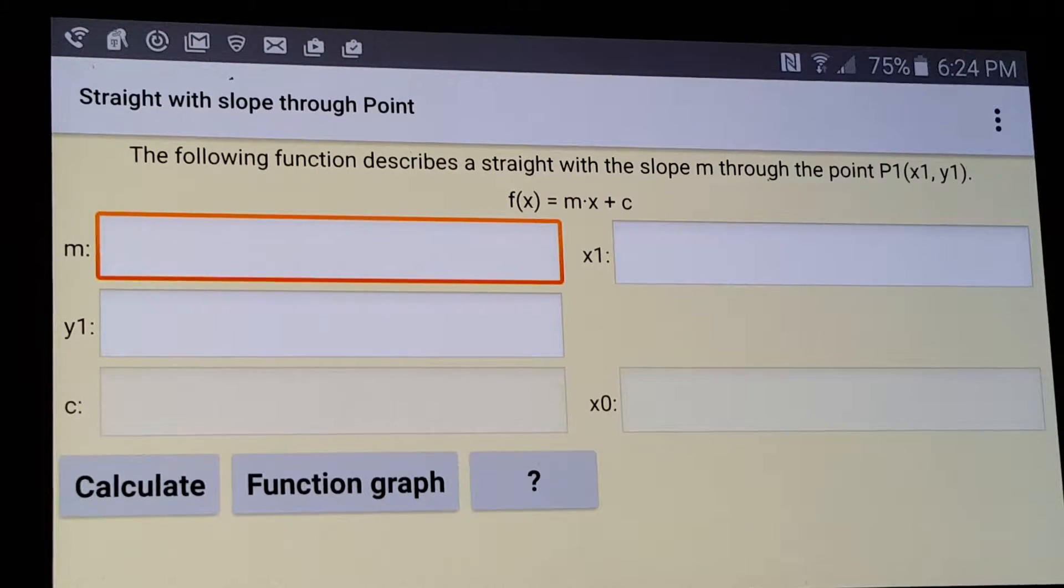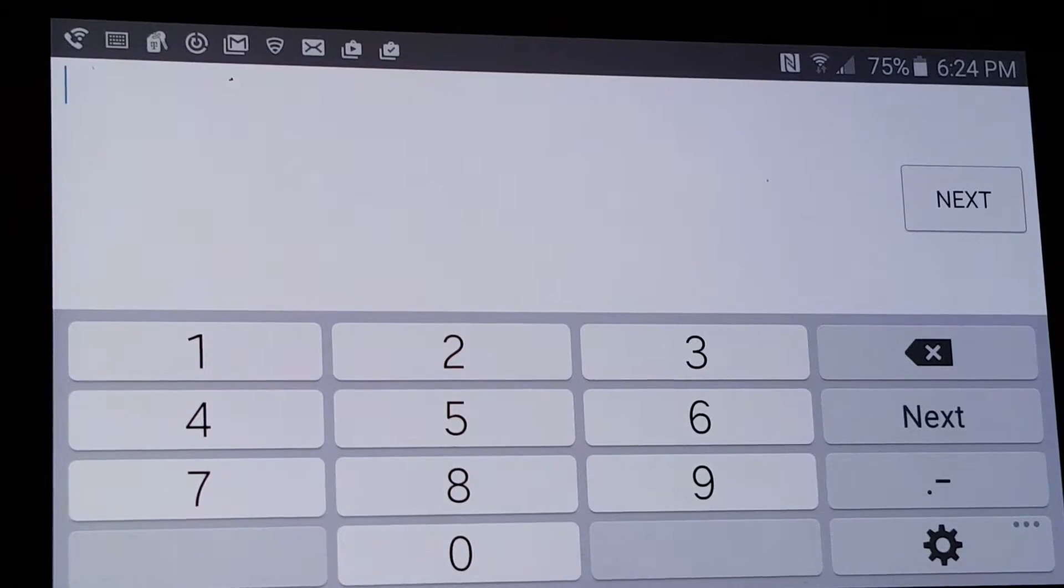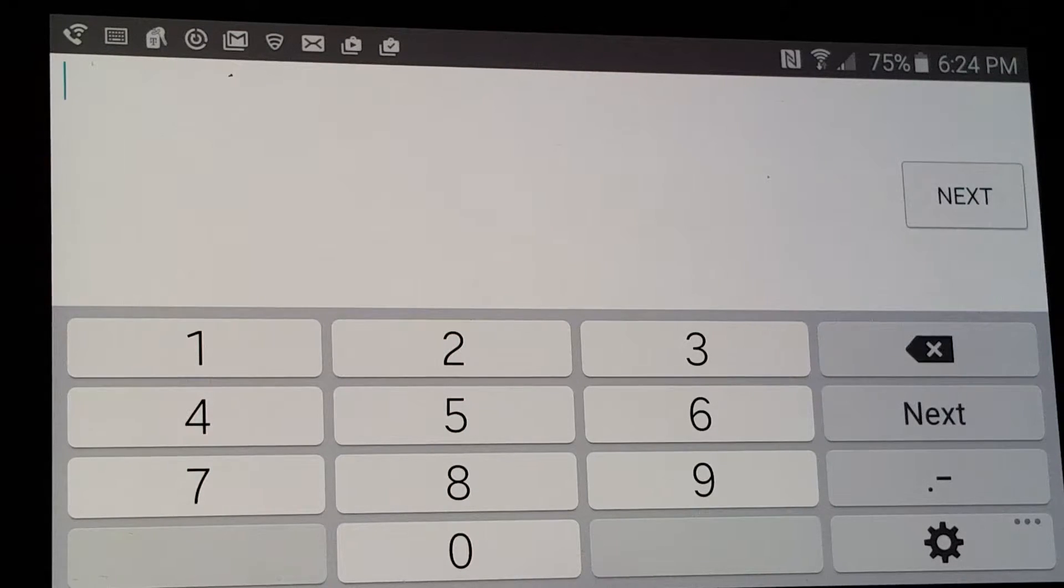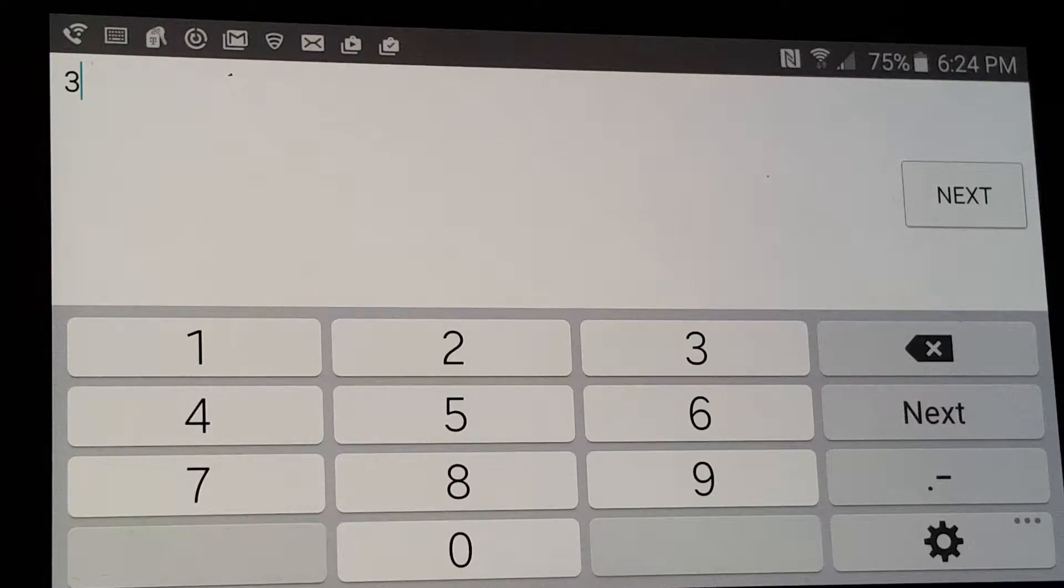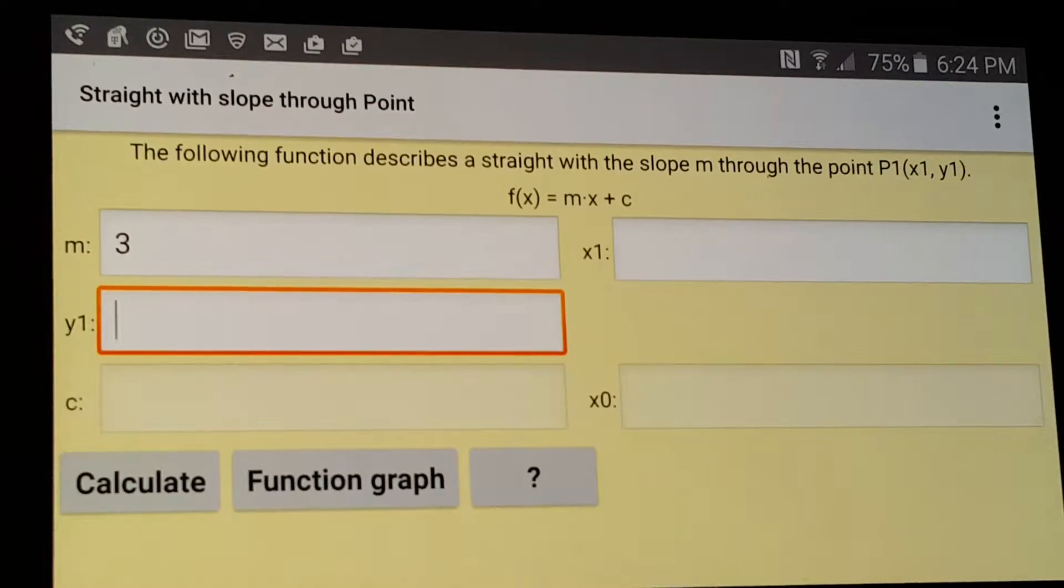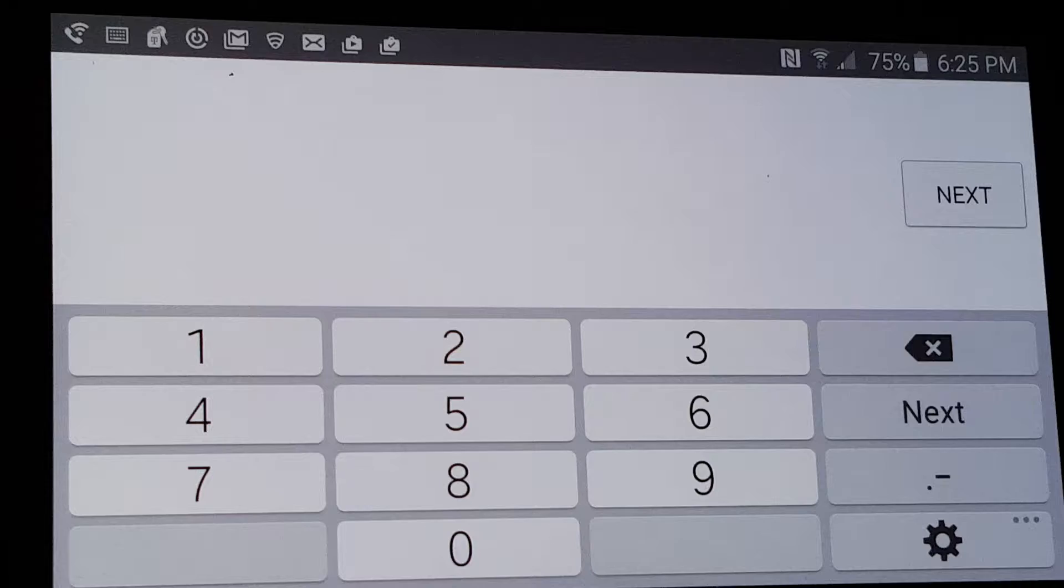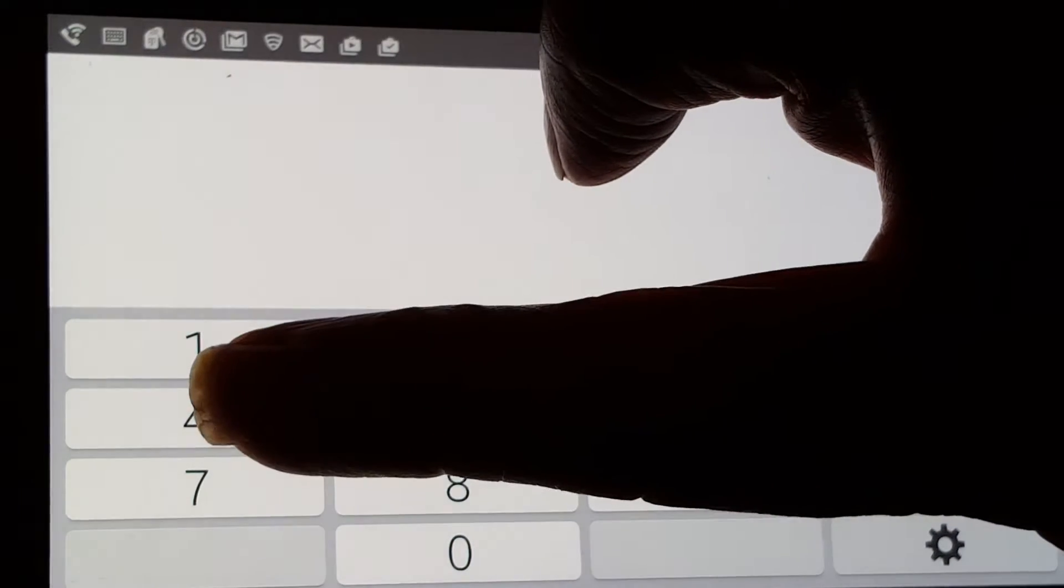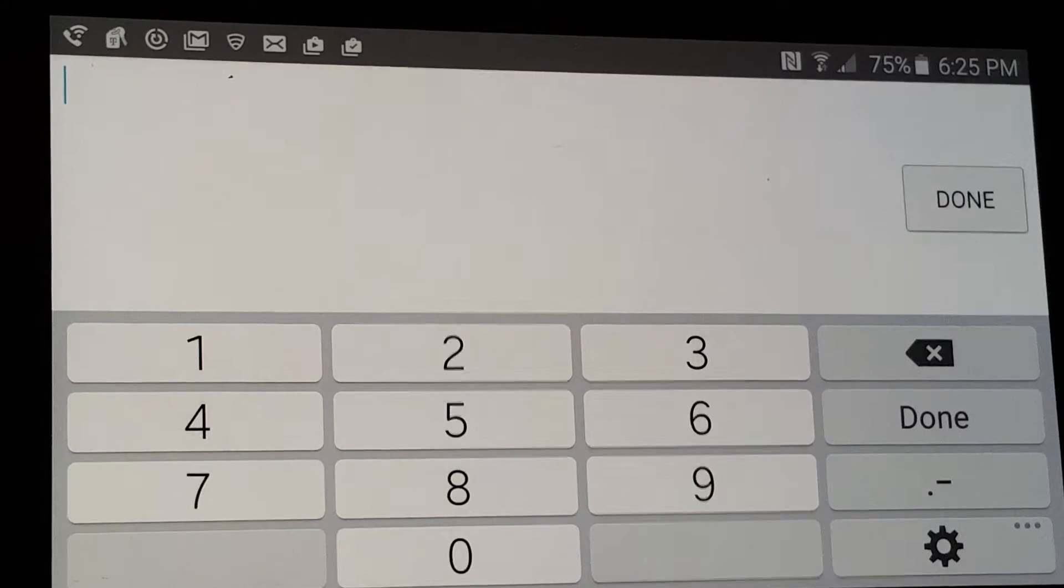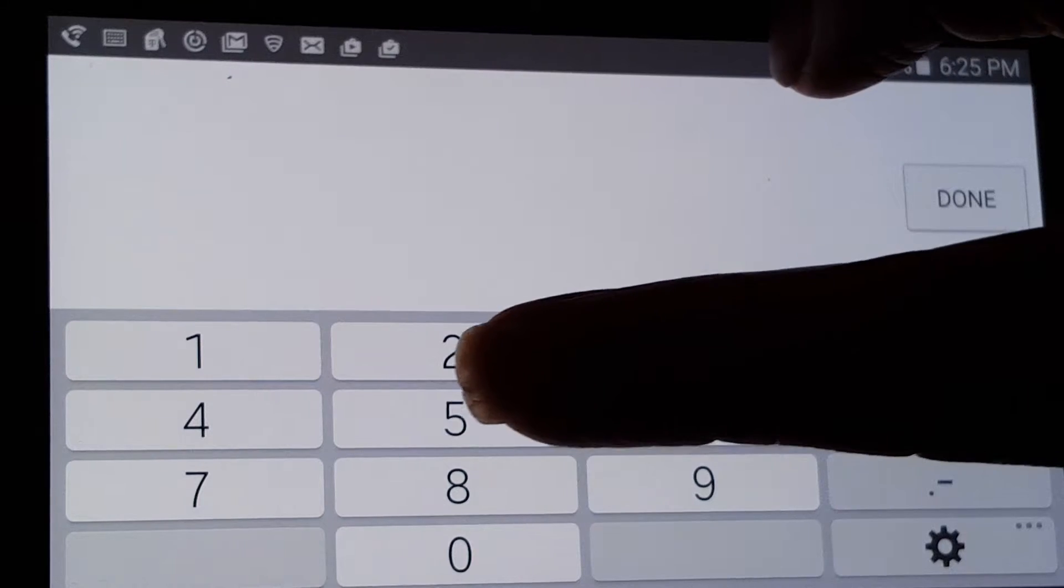So let's do a calculation. When I tap this, I will probably do for m, which is the slope, I'm going to put 3, and then I tap the next button, and the done button, and there's 3. For x1, I'll put in 4. And for y1, I'll put in 5.